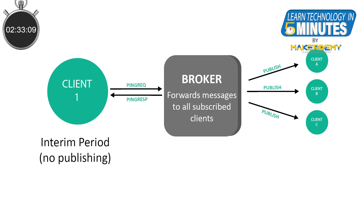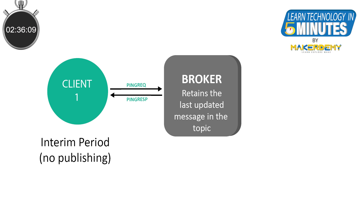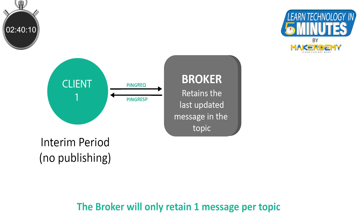Even when all the subscribers have received the message, the broker will retain the last updated message on the corresponding topic. It is also to be noted that the broker will only retain one message per topic at a time. In short, a retained message on a topic is the last updated message with the retained flag set to 1.